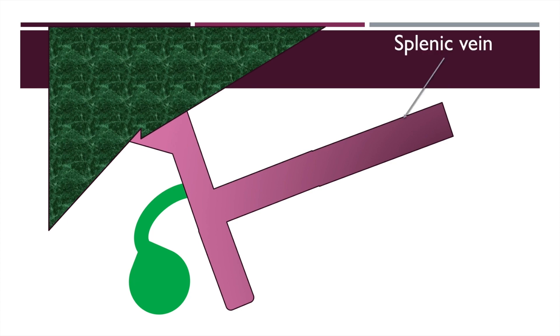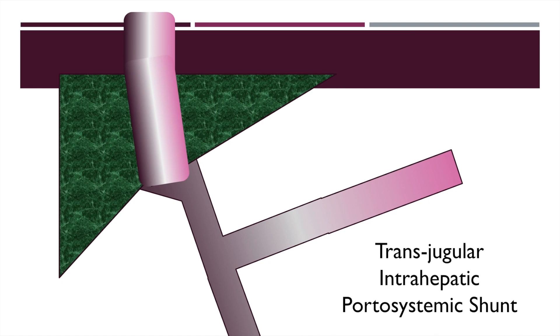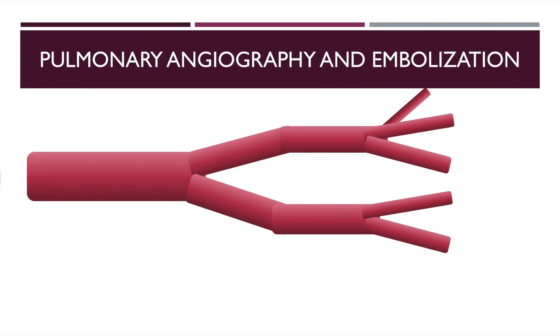The TIPS procedure — transjugular intrahepatic portosystemic shunt — creates a direct connection between the portal vein and the inferior vena cava, bypassing the obstruction caused by cirrhosis. The relevant anatomy includes the splenic vein, superior mesenteric vein, portal vein, and inferior vena cava. Additionally, pulmonary angiography and embolization is an interventional radiologic technique in the management of hepatopulmonary syndrome; the embolus introduced reduces intrapulmonary shunts.